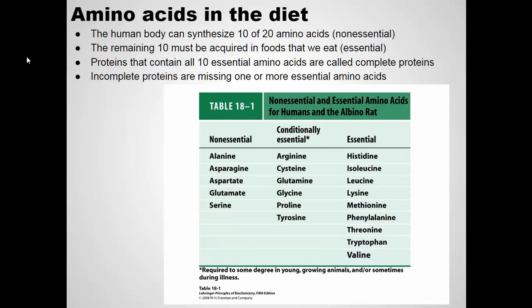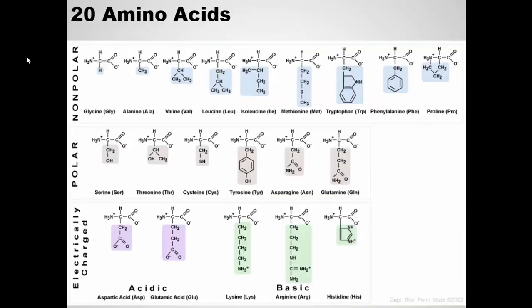We can make 10 of the 20 amino acids inside our own bodies. The other 10 that we don't make, we have to get from our diet — from the foods we eat. If you eat protein, it gets broken down and your body can get those amino acids it can't make on its own. Some of these essential amino acids are found mostly in animal products, some mostly in plant material. Vegans might need to be aware of what types of proteins they're eating to be sure they get all 10 of the essential amino acids.